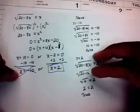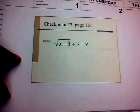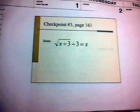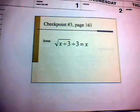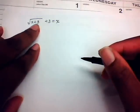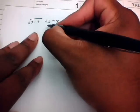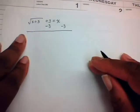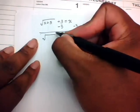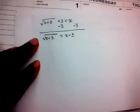Now let's look at a more difficult radical equation: √(x + 3) + 3 = x. We need to isolate the radical first, so subtract 3 from both sides, giving √(x + 3) = x − 3.